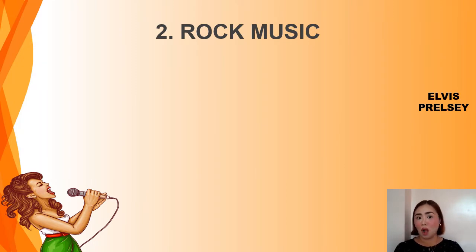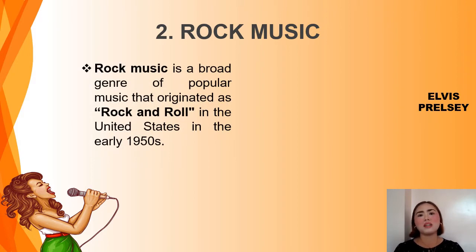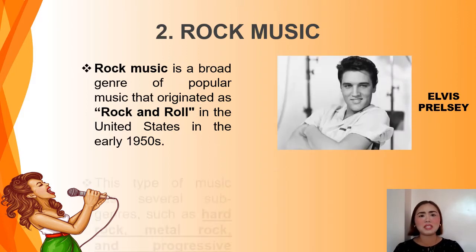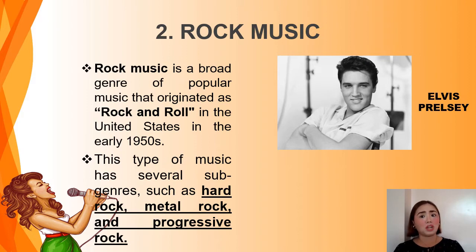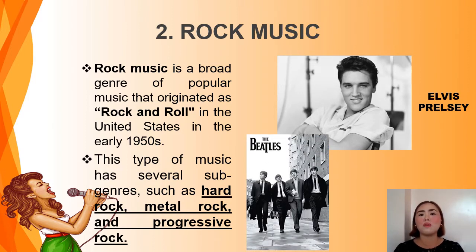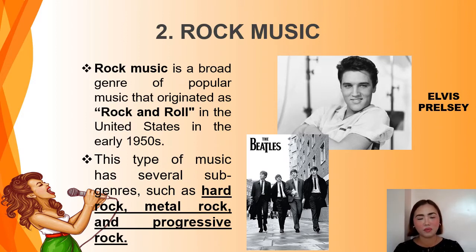The second genre of music is rock music. Rock music is a broad genre of popular music that originated as rock and roll in the United States in the early 1950s. This style of music has several subgenres, such as hard rock, metal rock, and progressive rock. Rock and roll has its roots in 1940s and 1950s rock and roll, a style which drew heavily on the genres of blues, rhythm and blues, and country music. The sound of rock music is traditionally centered on the amplified electric guitar, which emerged in its modern form in the 1950s with the popularity of rock and roll.